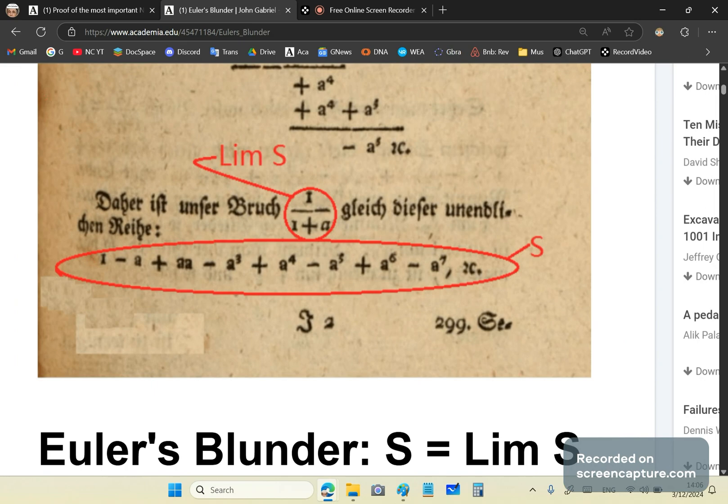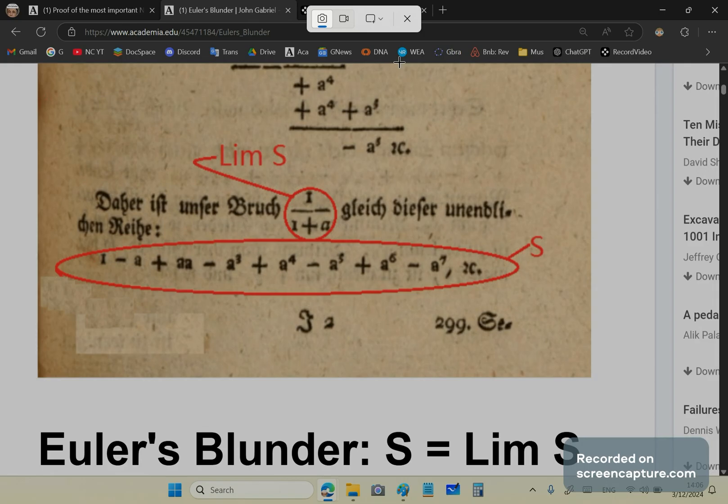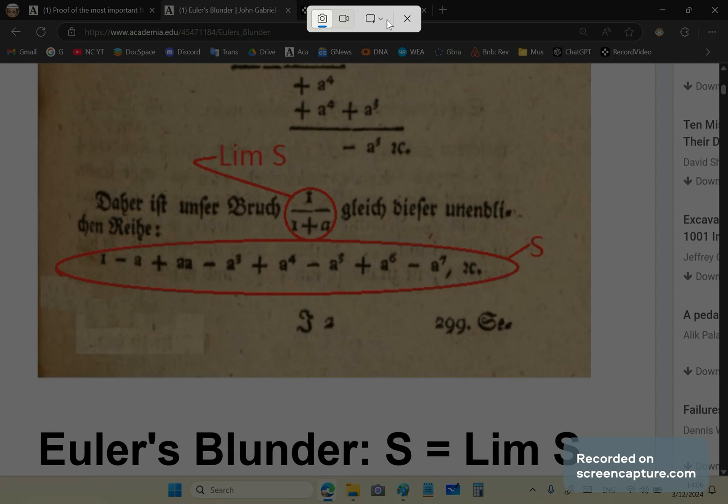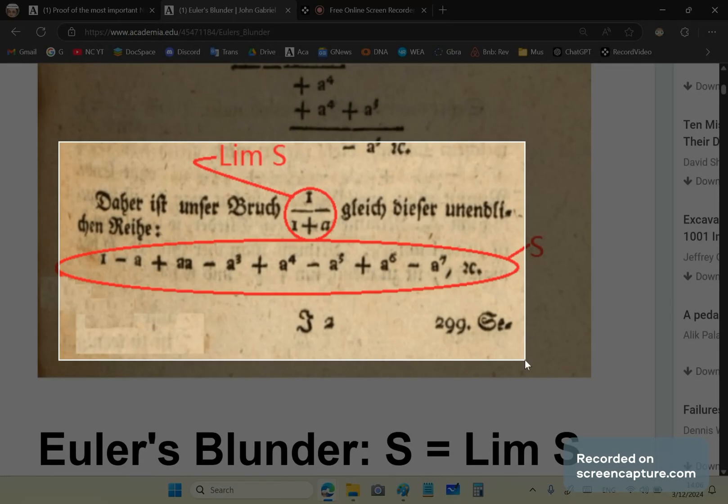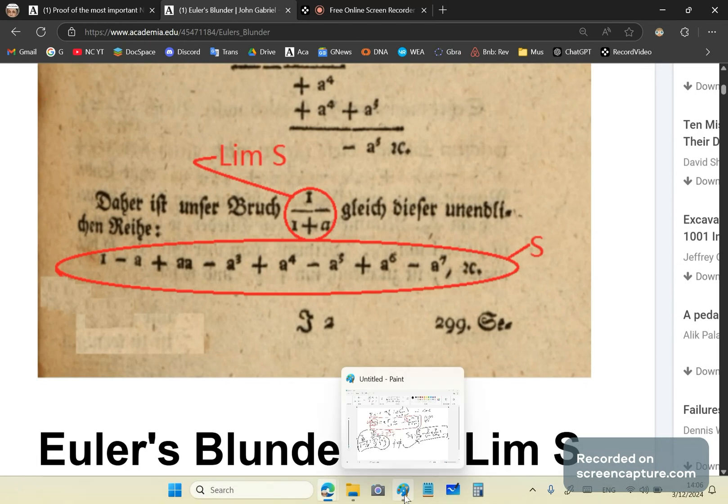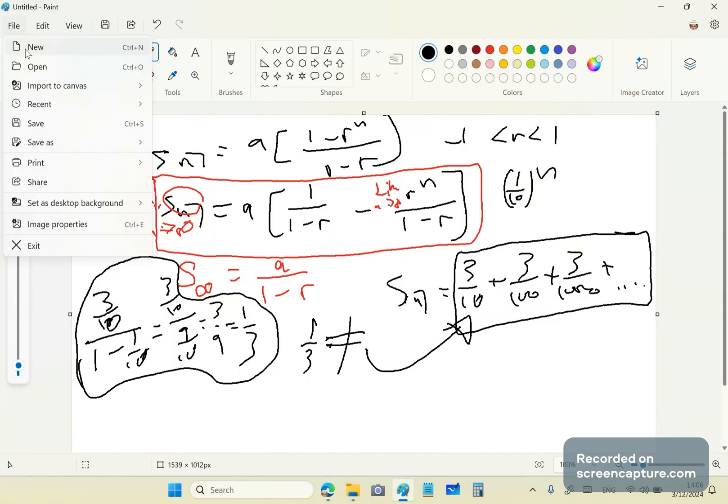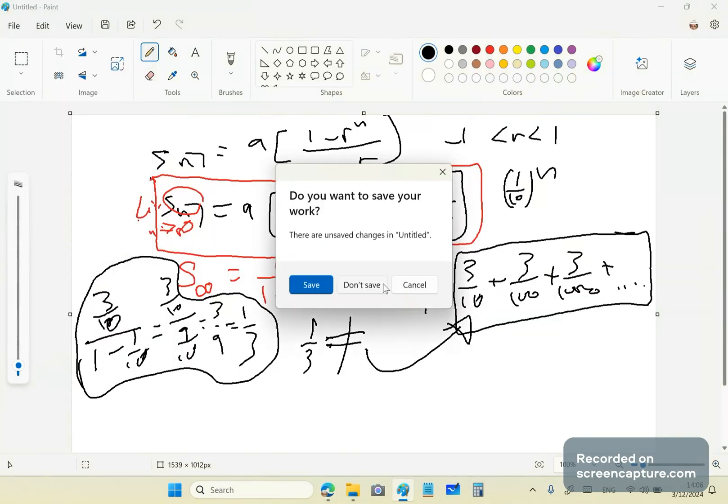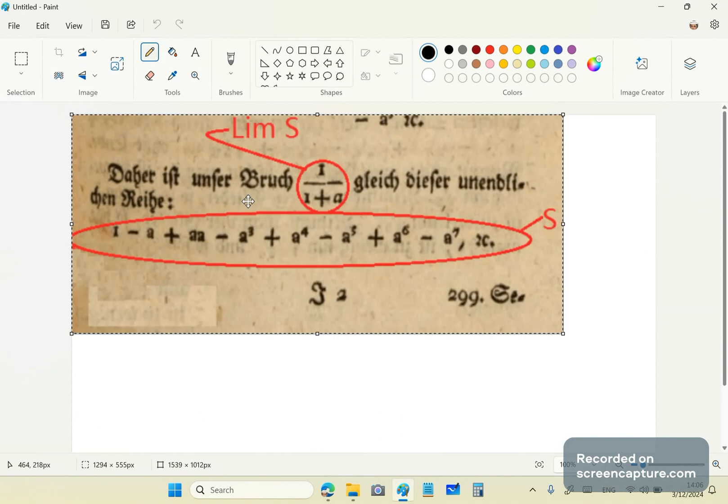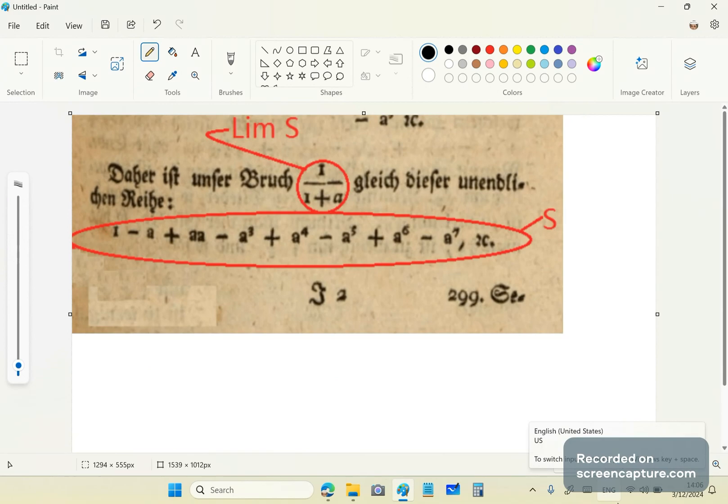And that infinite series there, by the way, can be denoted by s, as you see here. Let's get a copy of this. And let's see what's happening here. So we'll copy this, and clear this out, and paste it here, like that. So what is Euler saying?